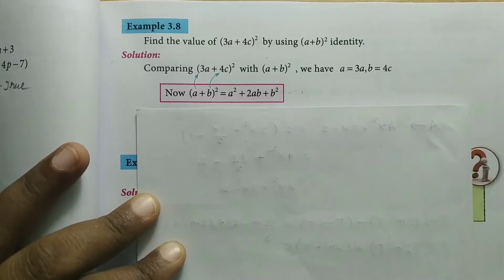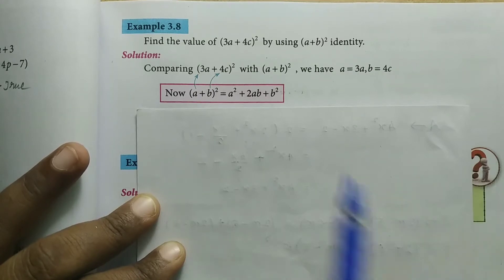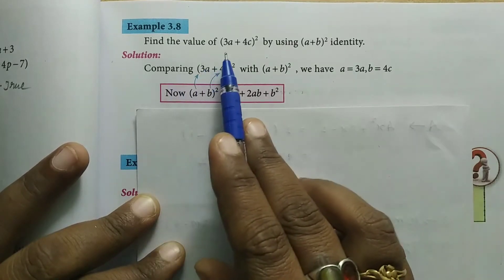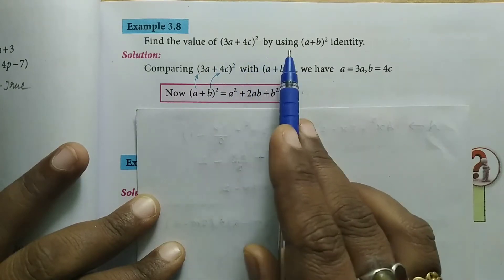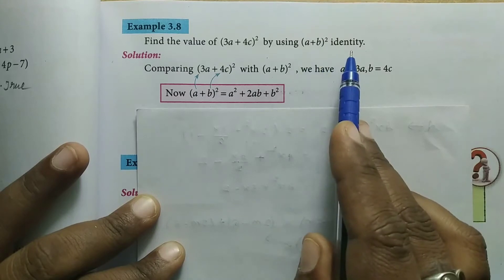Hello friends, welcome to VM Literacy channel. In this video, we're covering 8th standard math textbook, chapter 3, example 3.8. Find the value of (3a + 4c)² by using the (a + b)² identity.